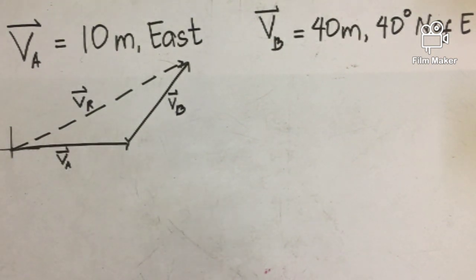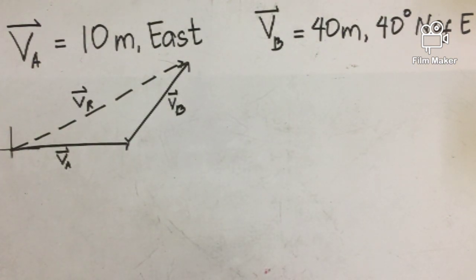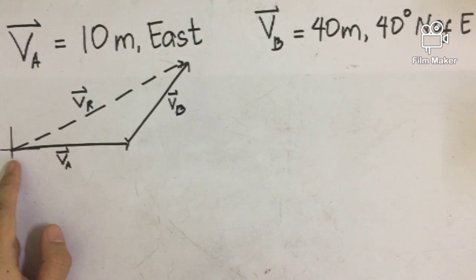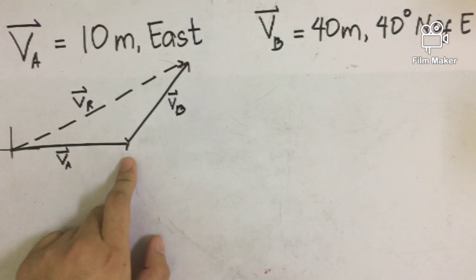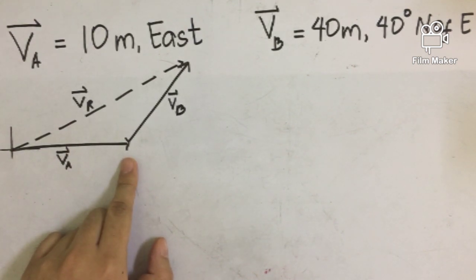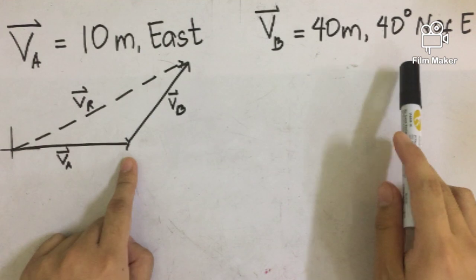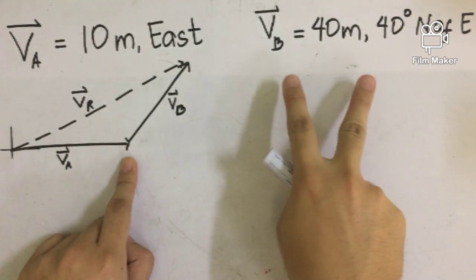We have here two different vectors. Vector A, which is equal to 10 meters to the east. Vector B, 40 meters, which is directed 40 degrees north of east. And this is how a vector is illustrated in a Cartesian plane. From the origin of the Cartesian plane, we draw 10 meters going east. And from the tip of the first vector, we draw the tail of the second vector, which is 40 degrees as the angle of projection north of east, with a magnitude also equivalent to 40 meters.